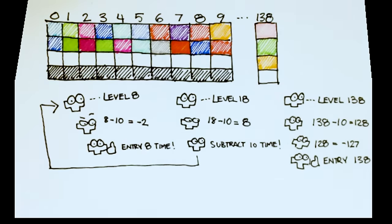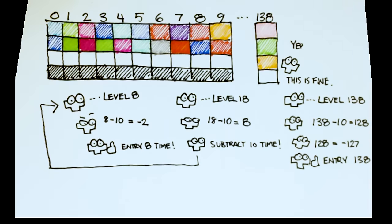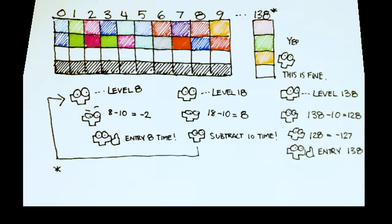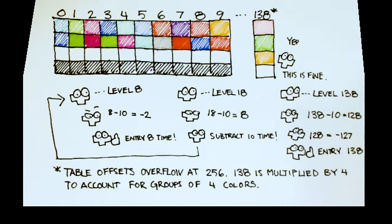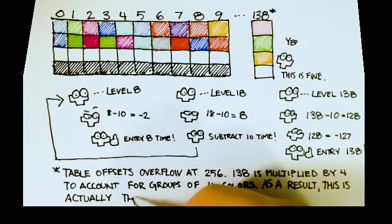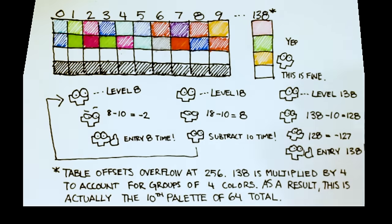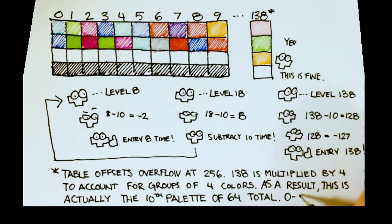So the resulting palettes look very strange. A small asterisk is that it's not actually loading entry 138. The colors as I said are in sets of 4, and table offsets wrap at 256. If you do out the math, 138 times 4 mod 256 is 40, meaning that it's loading the 11th palette where the first 10 are just the standard ones.